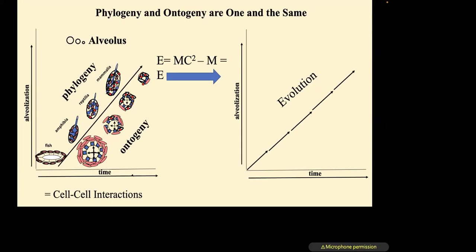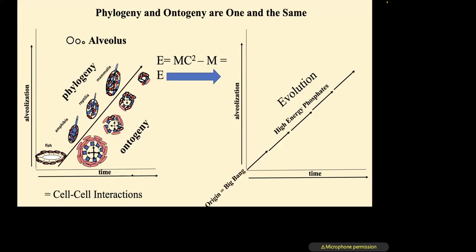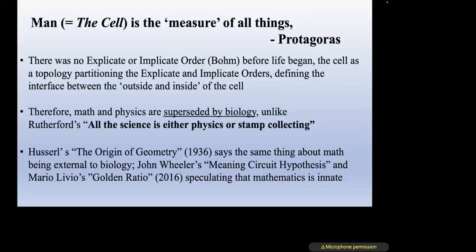Energy is facilitated by lung evolution providing oxygen for metabolic evolution. As an embryologist, what's actually happening is not merely the transition from fertilized egg to two, four, eight cells — that's description. What it actually constitutes is a series of high-energy phosphate exchanges: it's all about energy, not matter, occurring through cell-cell interactions. The origin for these Cartesian coordinates is the Big Bang. Man — or rather the cell — is the measure of all things, as Protagoras said in ancient Greece. The cell as a topology partitions the explicate and implicate orders, defining the interface between the outside and inside. Therefore, math and physics are superseded by biology.